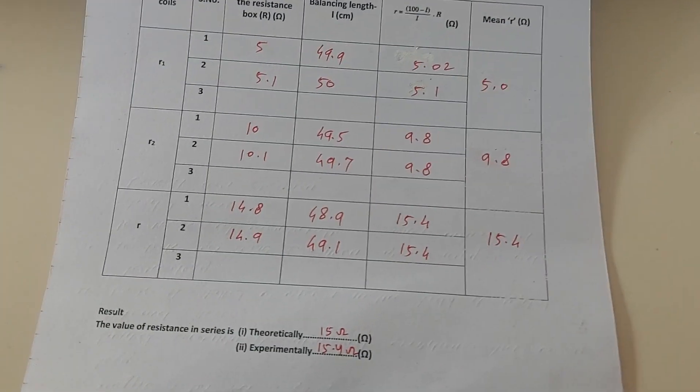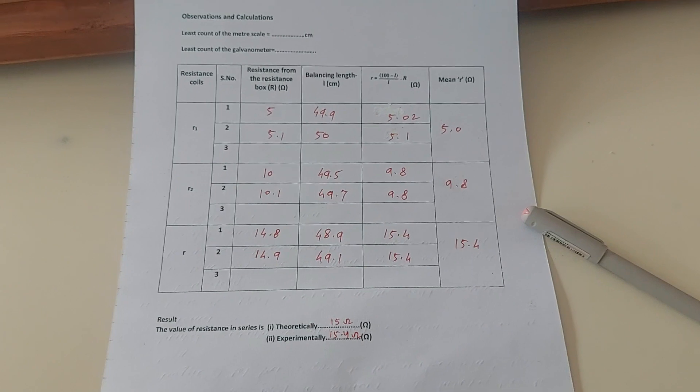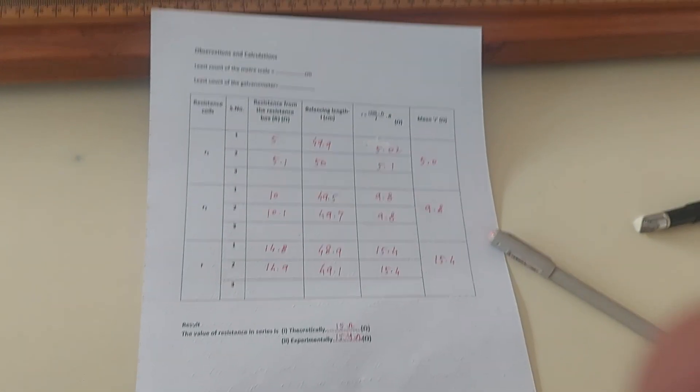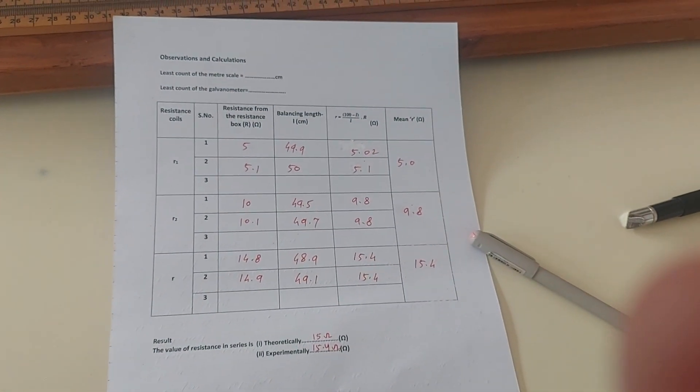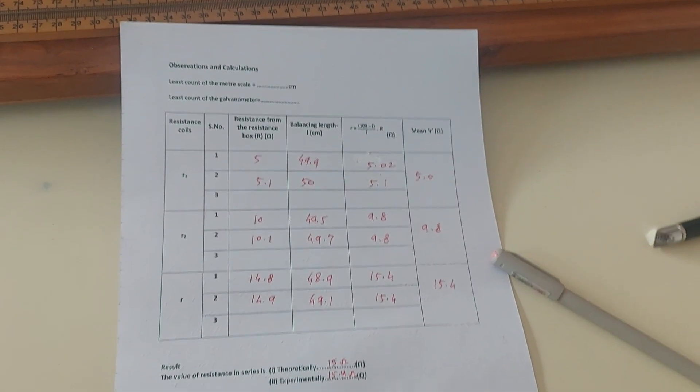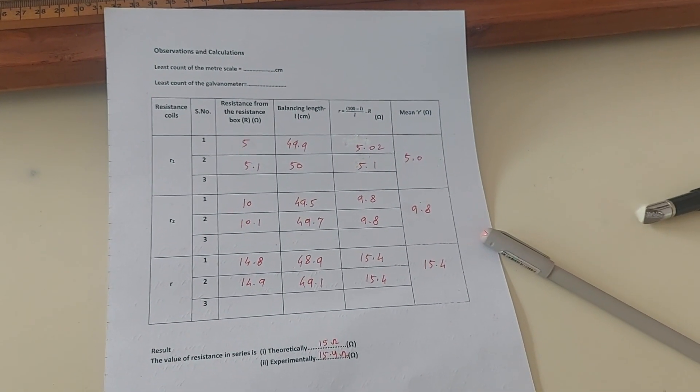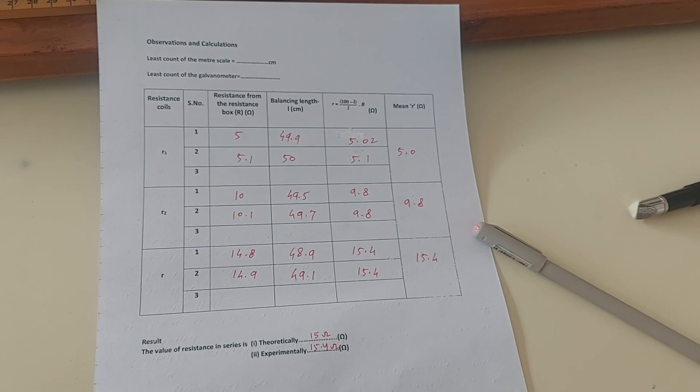So this is how you will conclude. This is the next experiment on Wheatstone bridge. In the next video we will work on half deflection, finding the galvanometer constant and resistance of the galvanometer. Thank you.